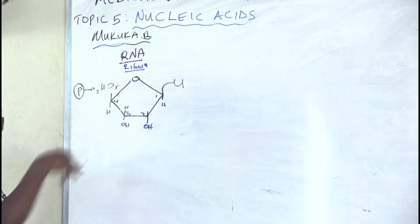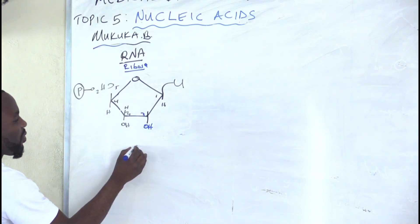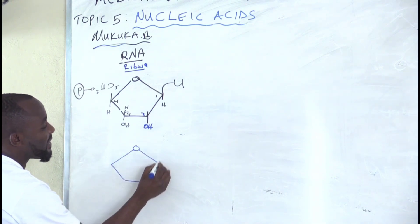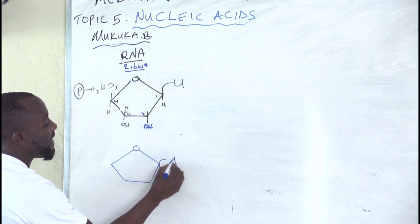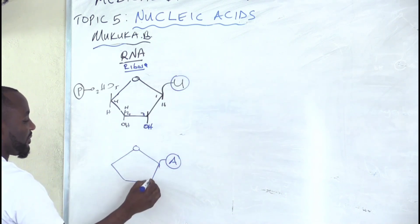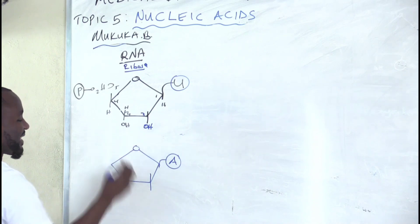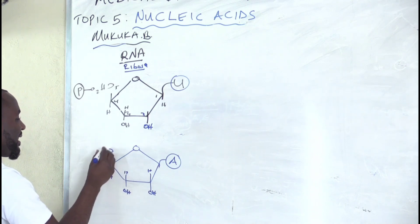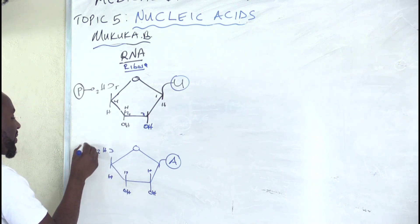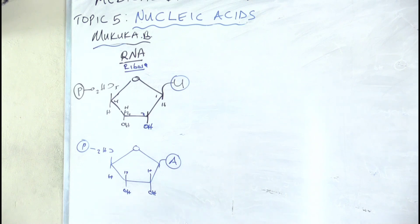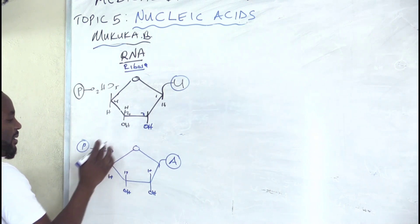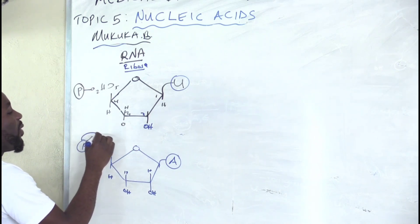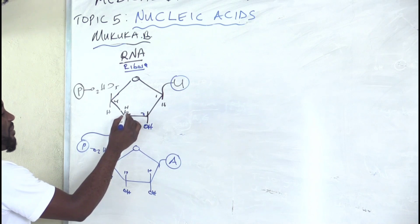Below this nucleotide I'm going to draw another nucleotide. If I want, I put a different base — maybe adenine. Because we are still doing RNA, there is OH on carbon two, and a phosphate is attached. What happens next is this hydrogen is removed and this phosphate bonds to carbon number three.